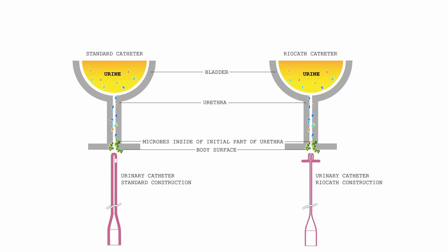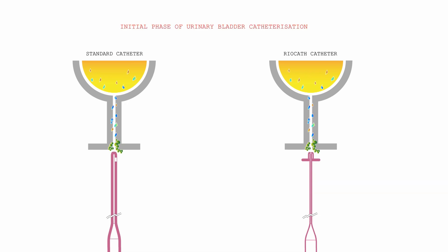There are also always sharp and hard microcrystals of oxalates and urates chemicals present in the urine in the urethra's interior. In the initial phase of catheterization, both catheters work the same way — they simply slide into the urethra.